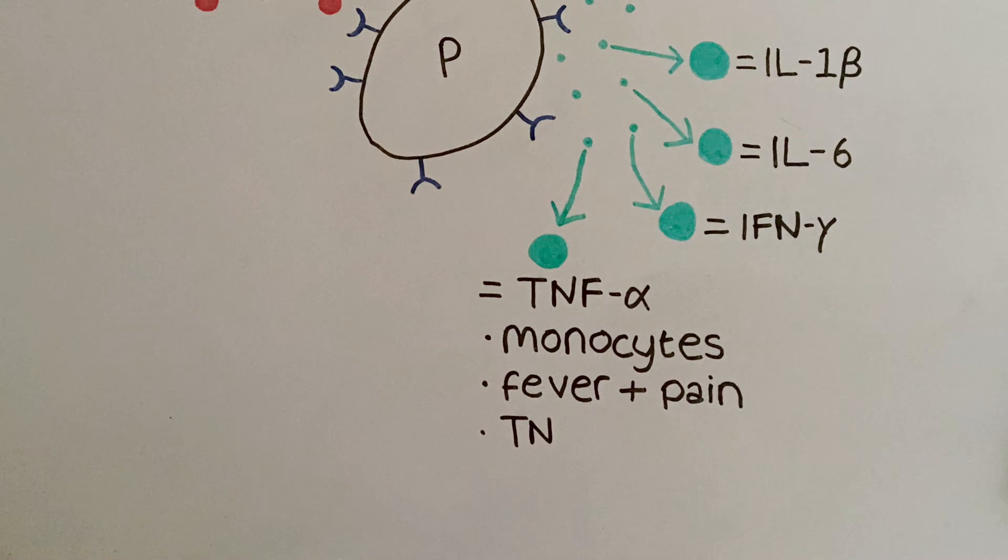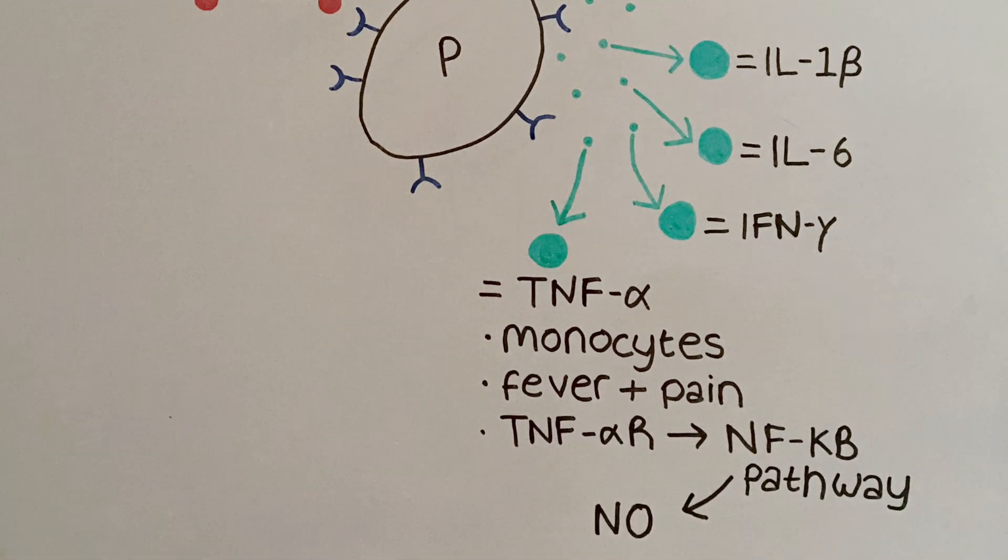TNF-alpha binds to its receptor, leading to the synthesis of proteins that increase the production of nitric oxide, an important gaseous signaling molecule that causes vasodilation.